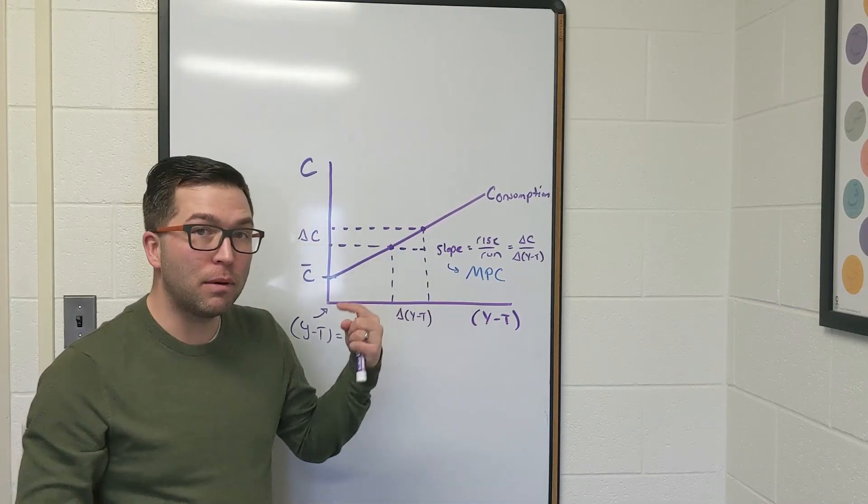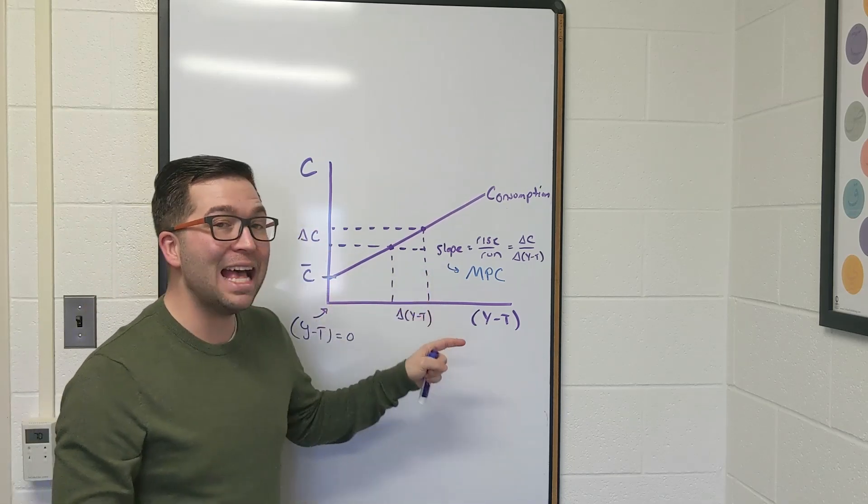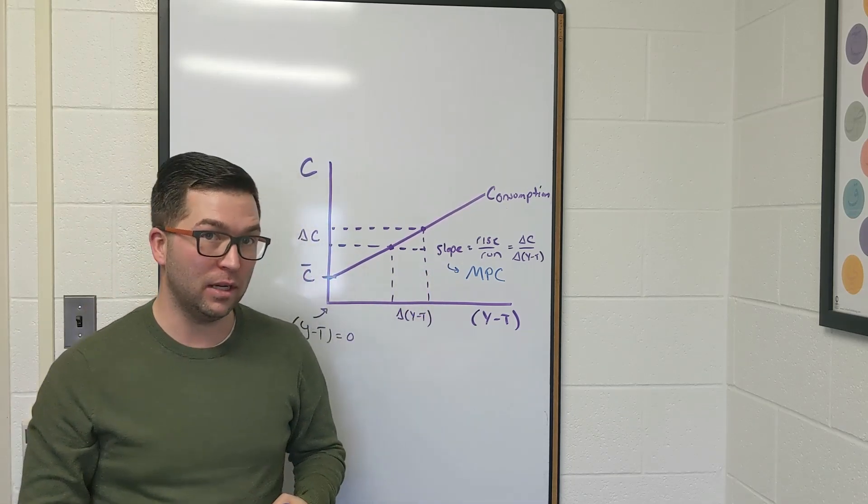Recall that marginal propensity to consume is defined as how much is consumption going to increase as we increase disposable income.